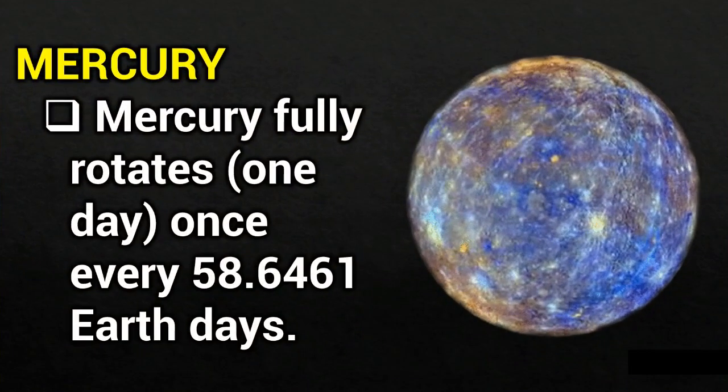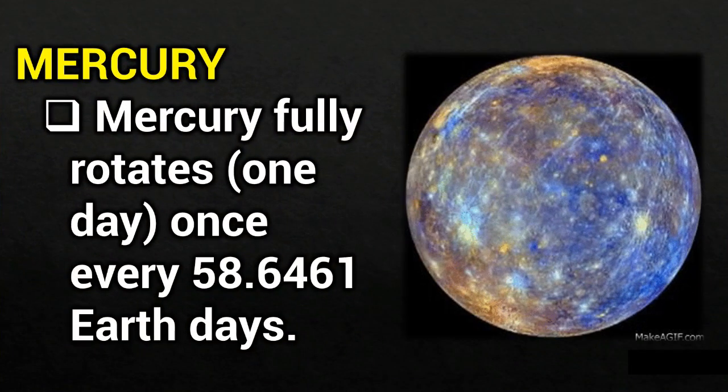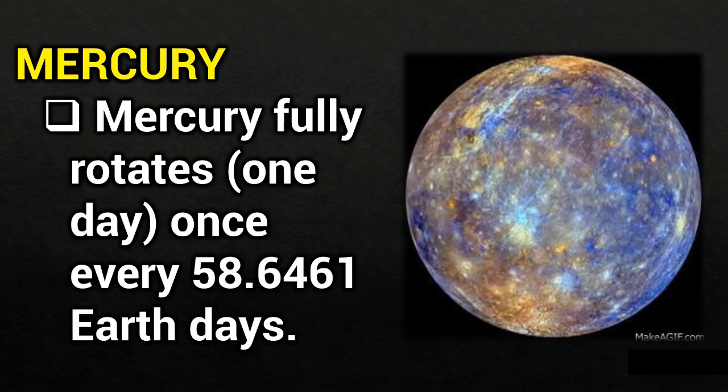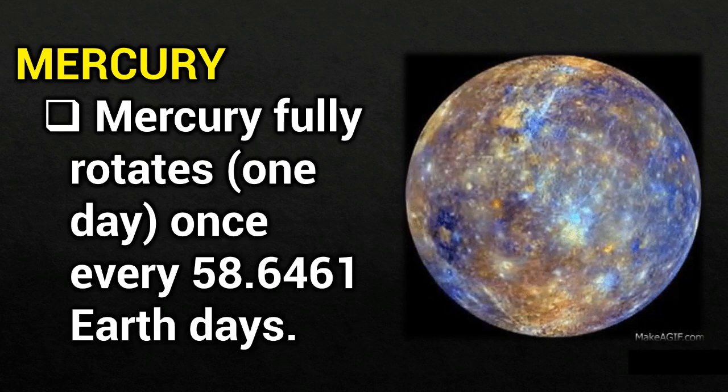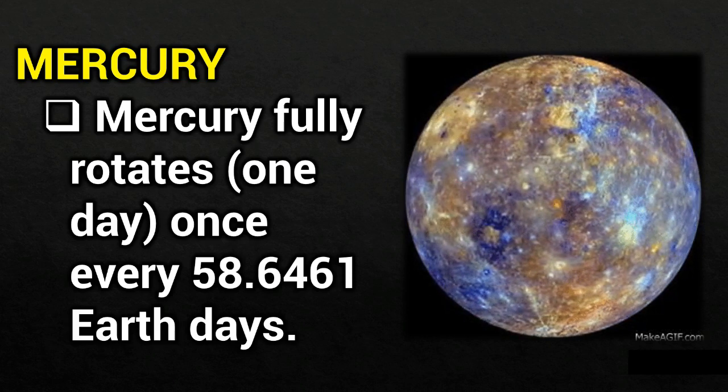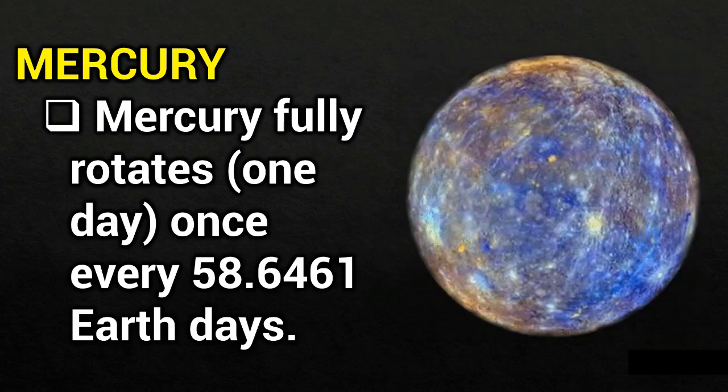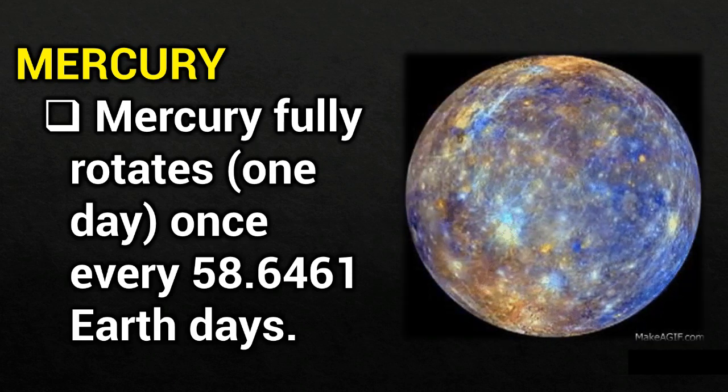Mercury. Mercury fully rotates once every 58.6461 Earth days.